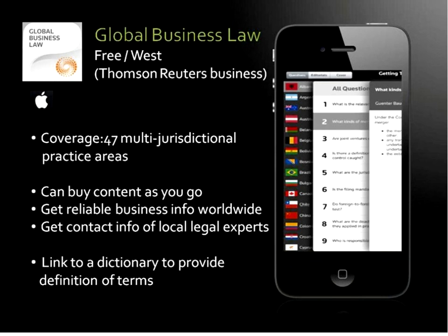Global Business Law, published by Thomson Reuters, provides over 47 multi-jurisdictional practice areas. The basic version is free but you can add on or buy content as you go. You get the most reliable business news or information worldwide, and contact information of local legal experts. It also provides a link to a dictionary of different terms. This is a really good app if you're a business librarian and have patrons who come in and ask about business law — it's very comprehensive, covering a lot of practice areas worldwide.